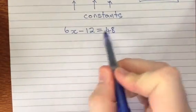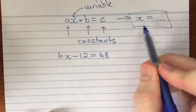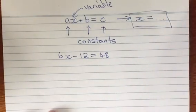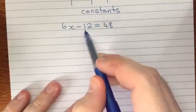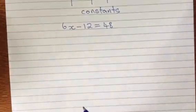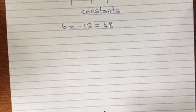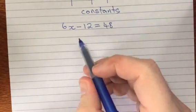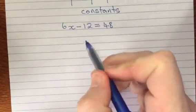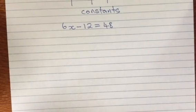Now the things stopping us from turning this into our x equals something sort of form are the fact that we've got a 6 multiplying by the x and we've also got a minus 12 here that's sort of messing things up a little bit. So we're going to apply some operations now to get rid of those and end up with x equals something. The first thing I'm going to try to get rid of is the minus 12 basically because it's the easiest one to get rid of.